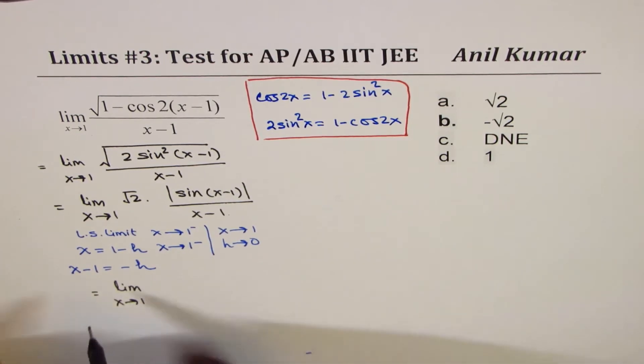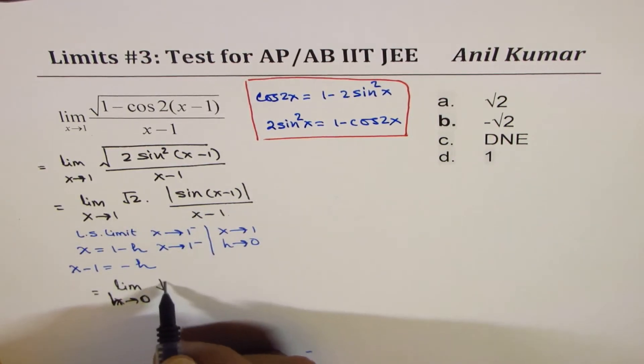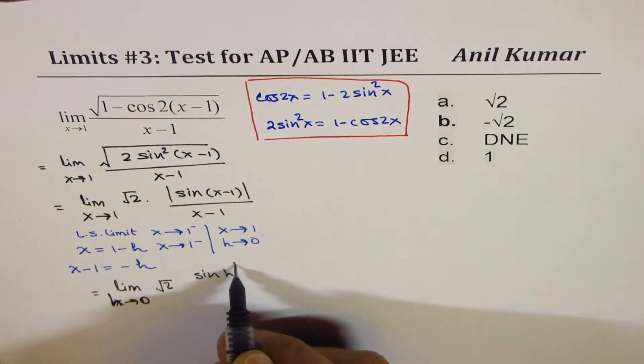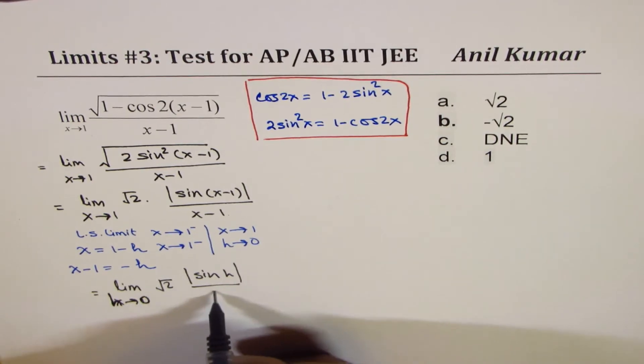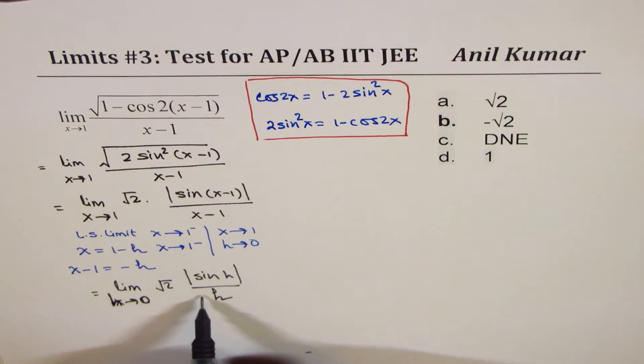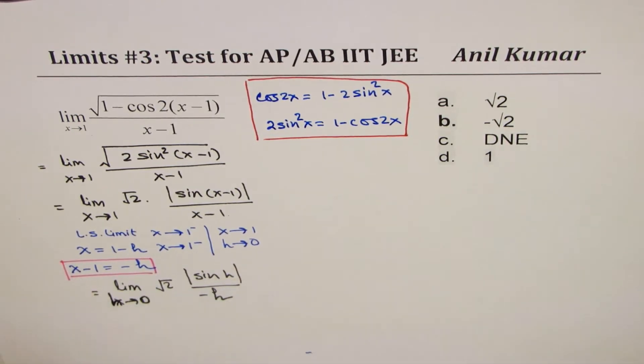So therefore, we could write this as limit h approaches 0. We're replacing everything with h now. Square root of 2, sine of h, absolute value, over h. So now you are approaching from 0, and this value becomes minus h. x minus 1 is minus h, so we'll replace this with minus h.